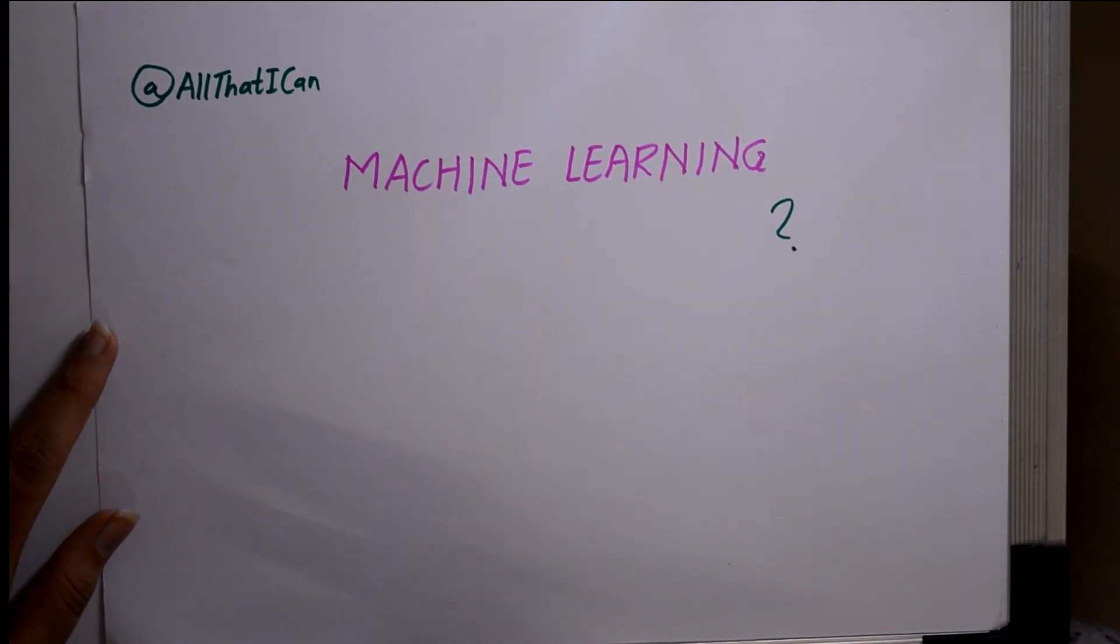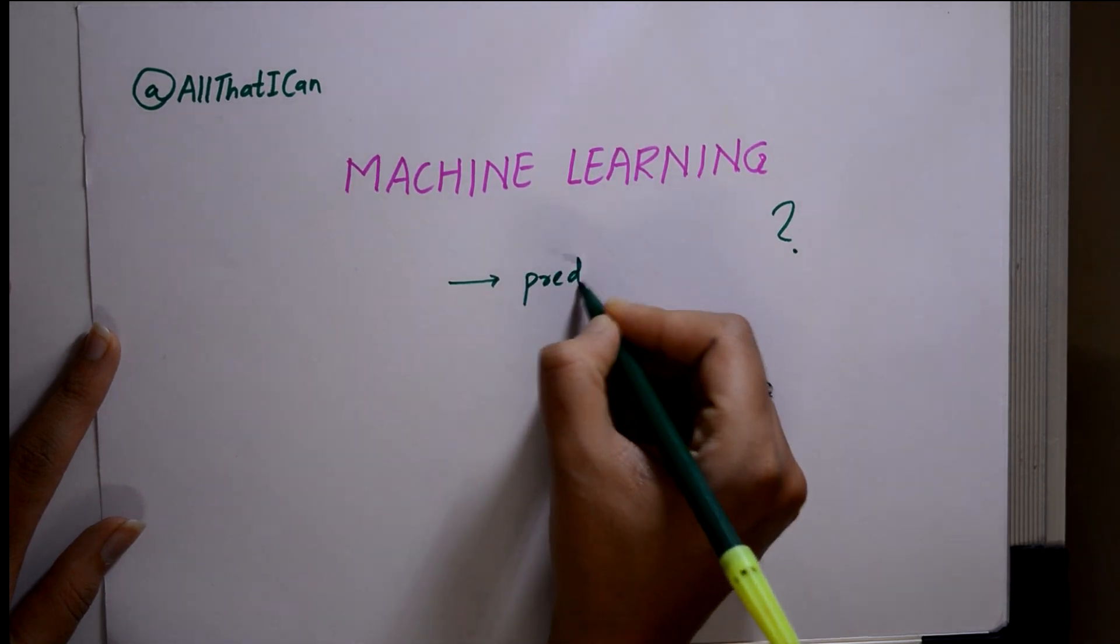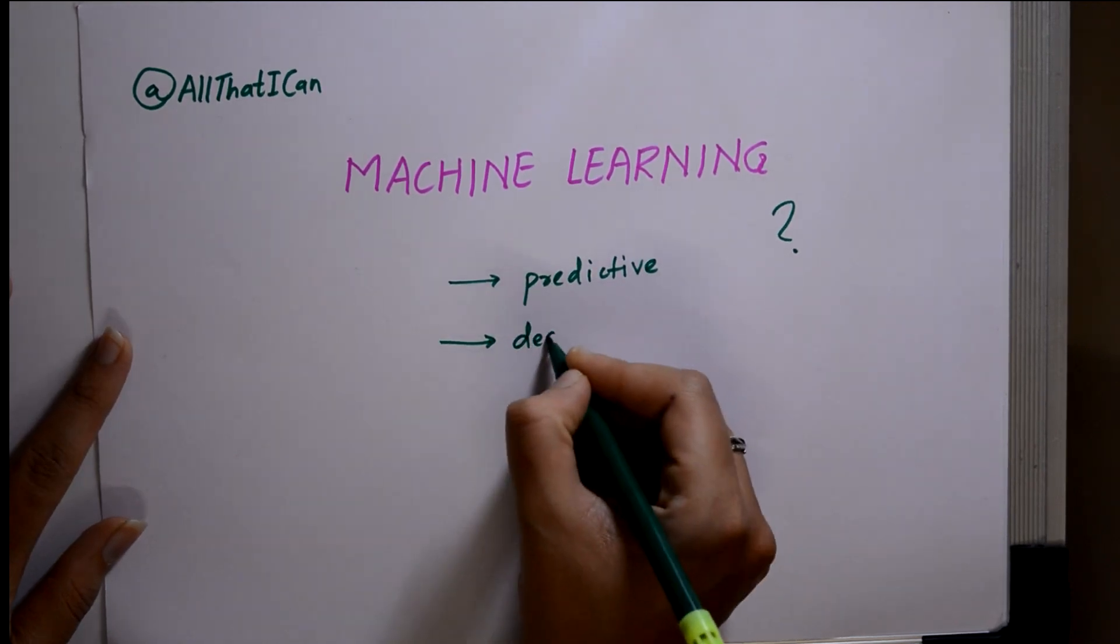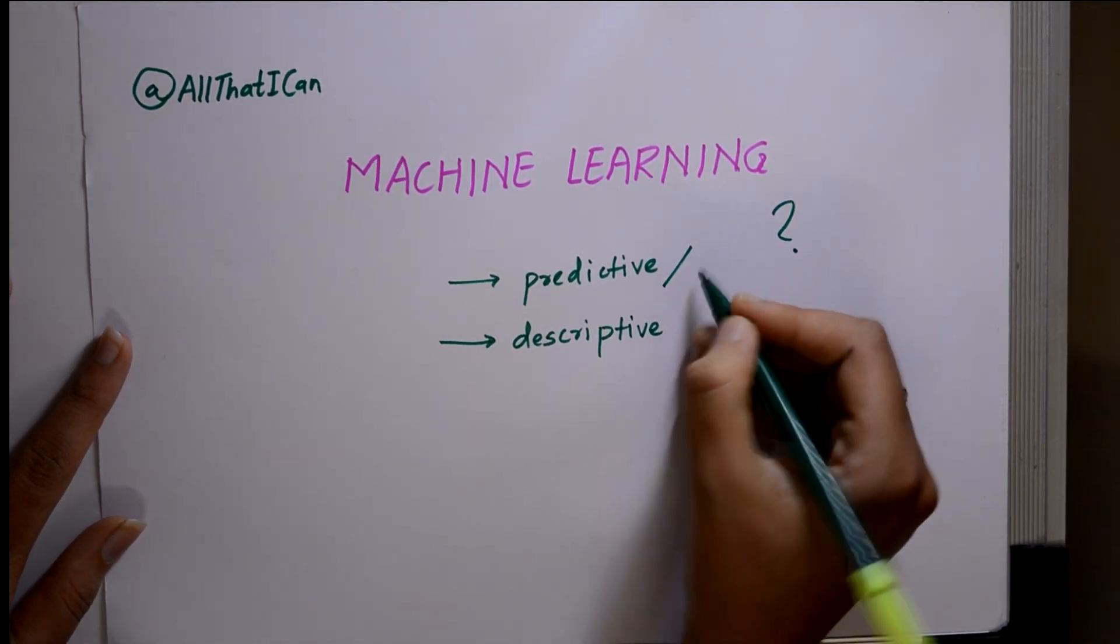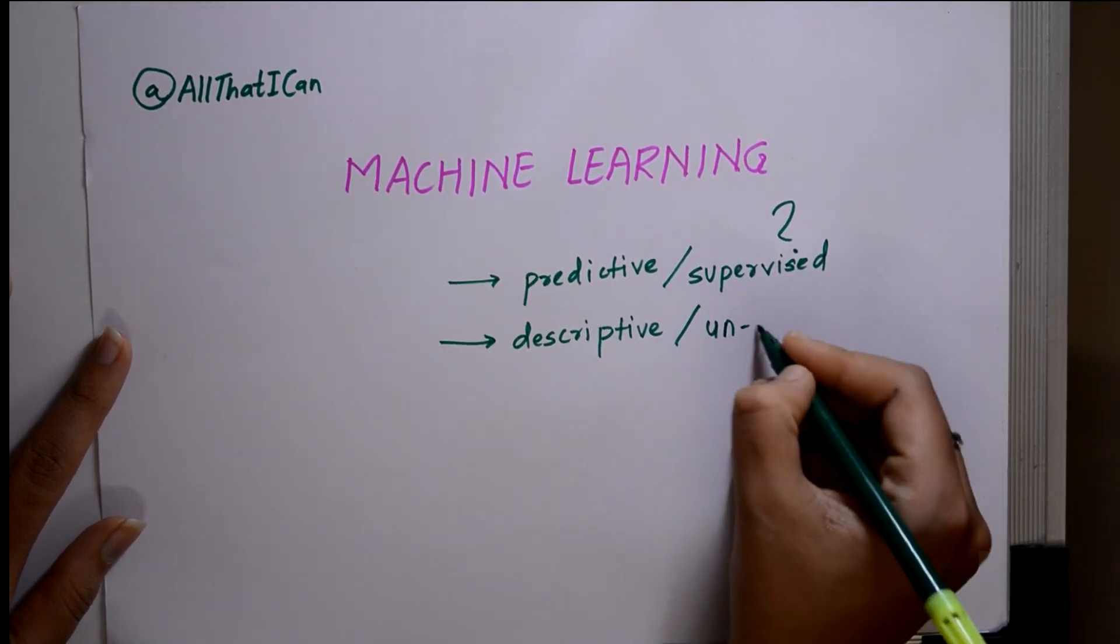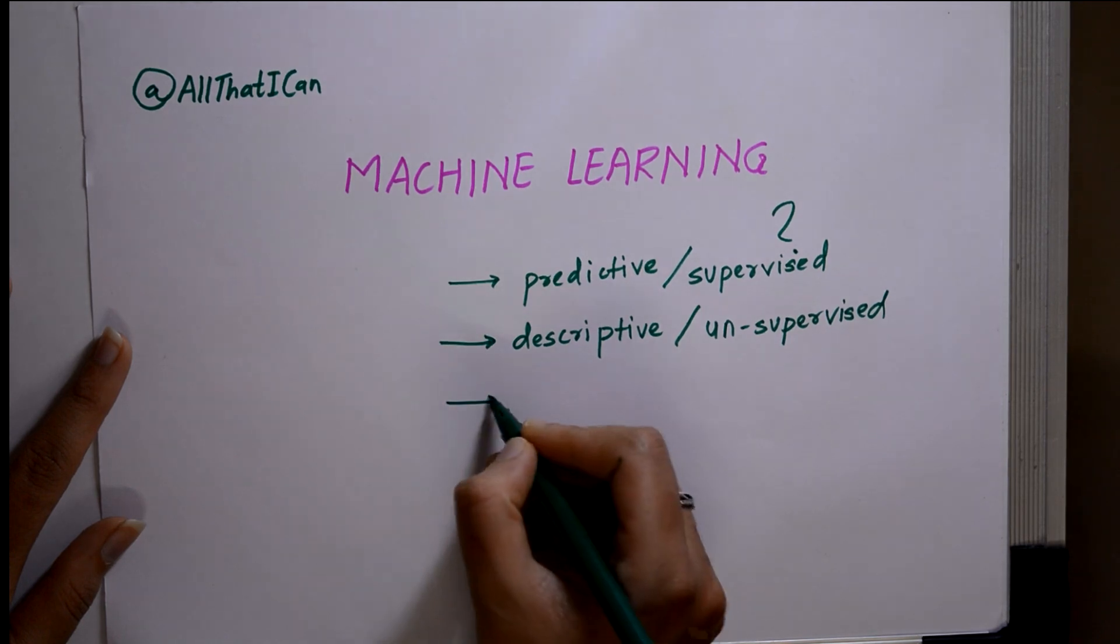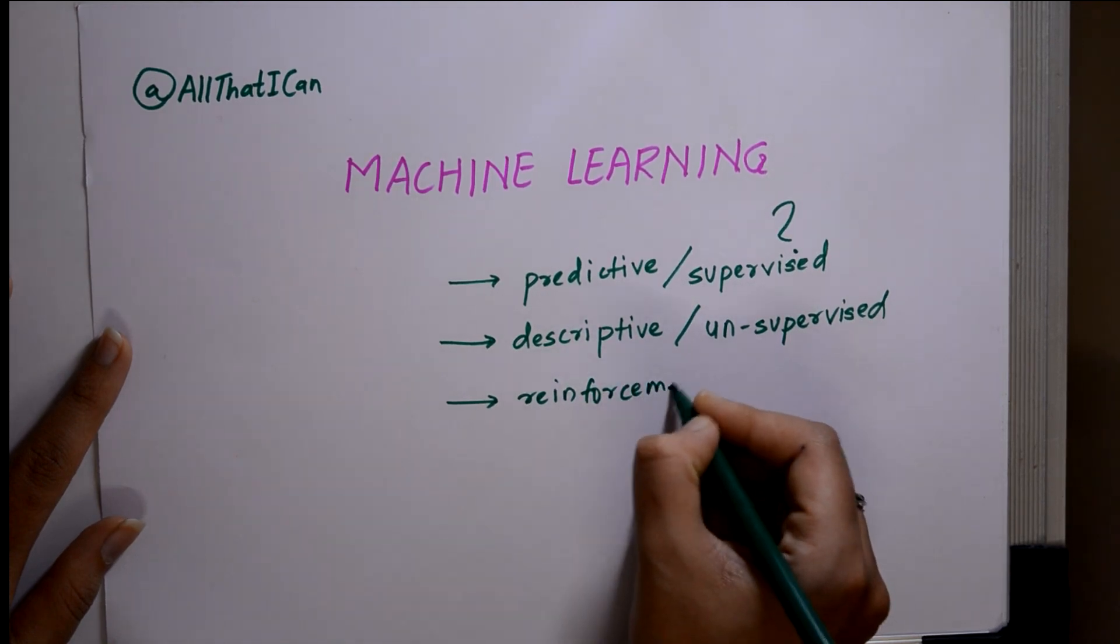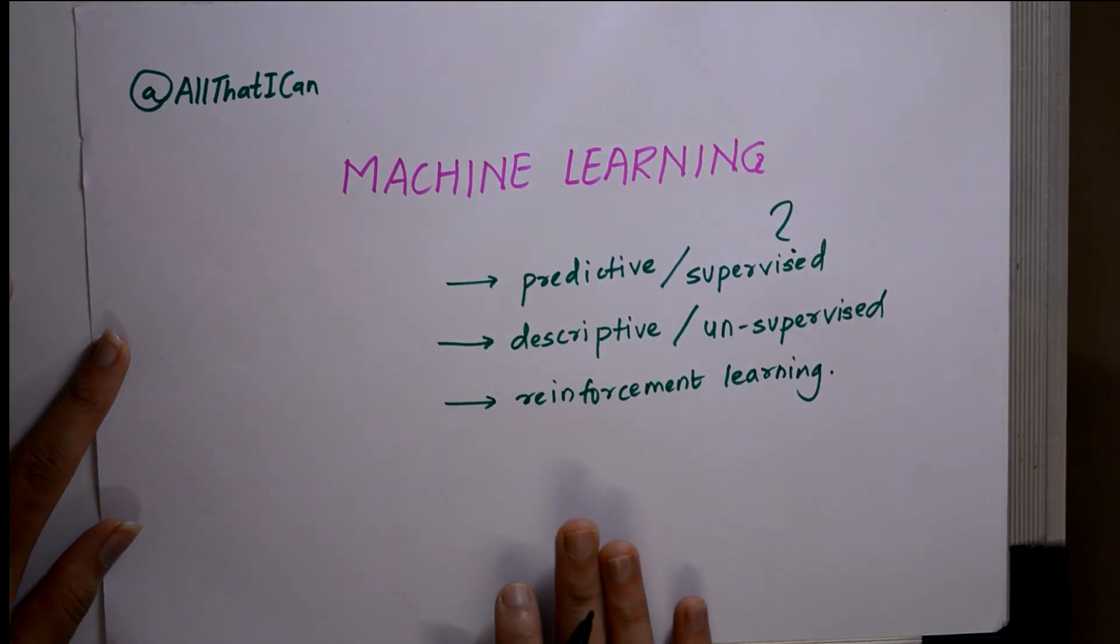There are three types of ML. The first method is predictive, second we can call it as descriptive. Predictive is also called supervised, and descriptive can also be called unsupervised. The third type of machine learning is reinforcement learning. These are three types of machine learning.